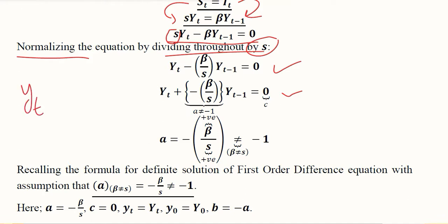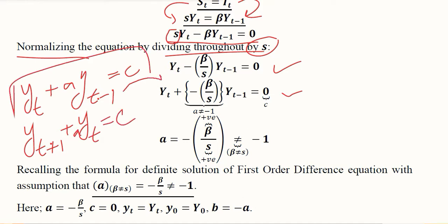Here we are taking another version of the first order difference equations, that is this one instead of this one, where the first lead of the variable is used. This is the value of small a and this is the value of c which is zero here.